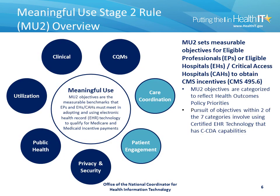Stage 2 of the Meaningful Use Program can be broken down into seven different categories for objectives, which reflect health outcome policy priorities. Those categories are privacy and security, public health, utilization, clinical, clinical quality measures, care coordination, and patient engagement. For the purposes of this session, we'll be focusing on the areas of care coordination and patient engagement, which are the certification categories where the use of consolidated CDA is required.